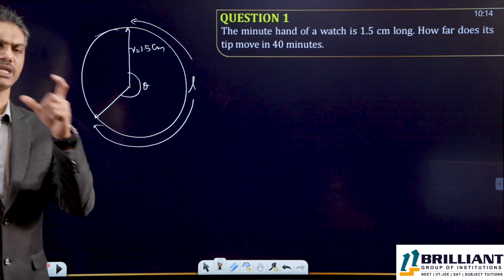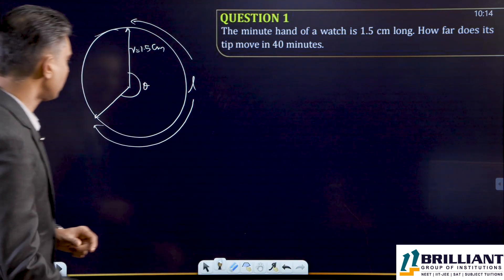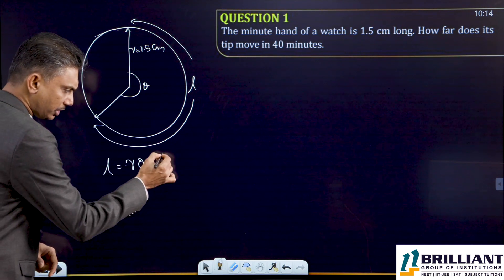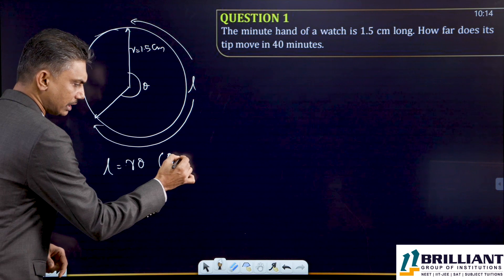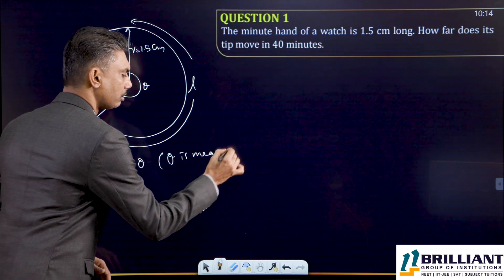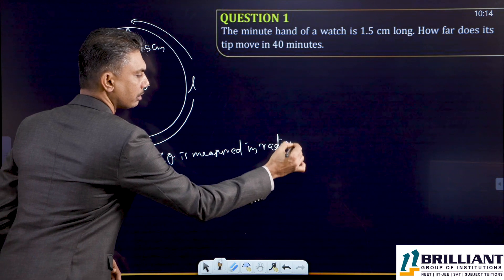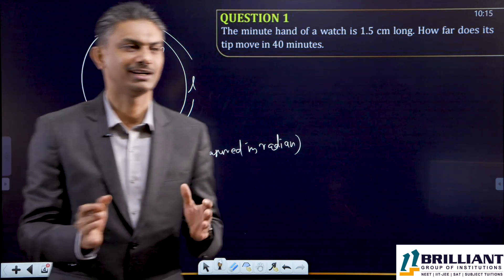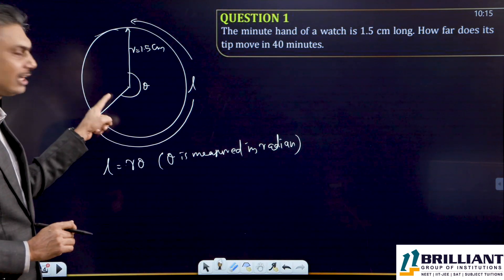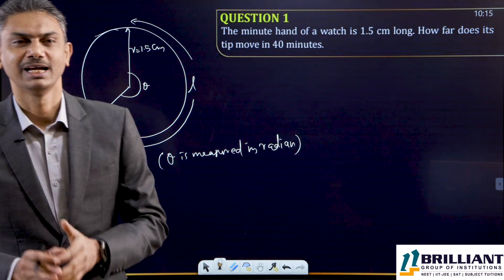We have studied an important result in the first session of trigonometry: arc length L is equal to r theta. The important thing here is that theta is measured in radian. So we have everything here — r is 1.5 centimeters. Now we need to find theta, and then multiply 1.5 by the angle.